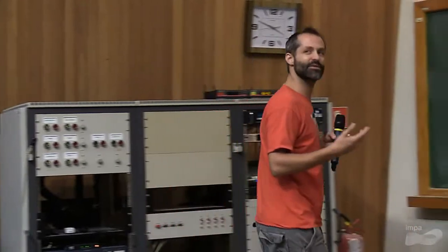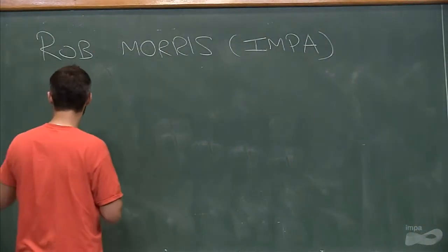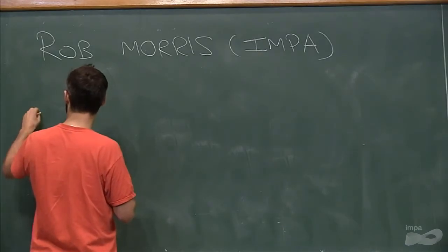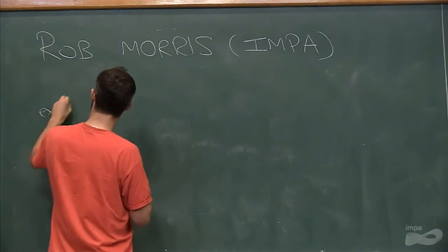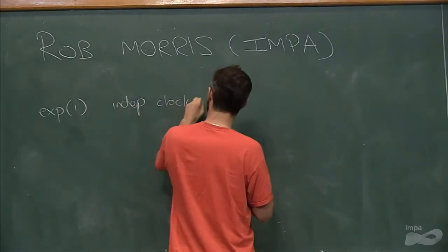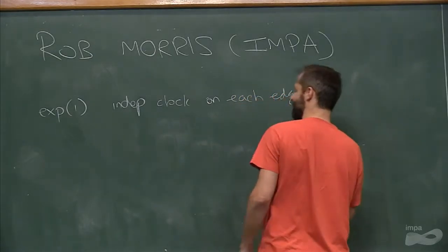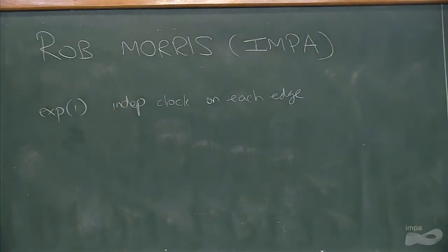But suppose we allow edges to both appear and disappear. So I'm not sure exactly what the best way to phrase this, but maybe we put a sort of exponential one independent clock on each edge. And then when the clock rings, if you're an edge, maybe you become a non-edge.